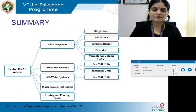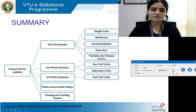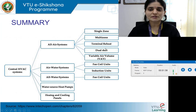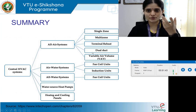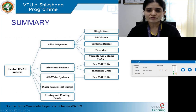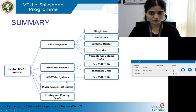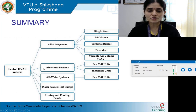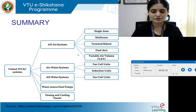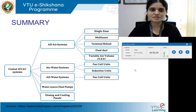In summary, central HVAC systems include: all-air systems (single zone, multi-zone, terminal reheat, dual duct, variable air volume), all-water systems (fan coil units), and air-water systems (fan coil or induction units). Water source heat pumps and heating and cooling panels are also extensions of central AC. This covers all types of AC systems studied.